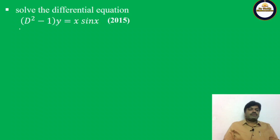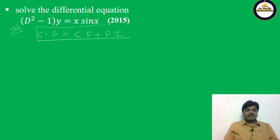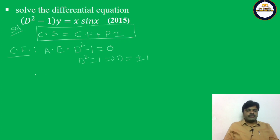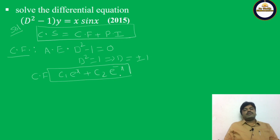The complete solution equals complementary function plus particular integral. For the complementary function, write the auxiliary equation: D² - 1 = 0, so D² = 1, which gives D = ±1. Therefore, the complementary function is c₁·e^x + c₂·e^(-x).